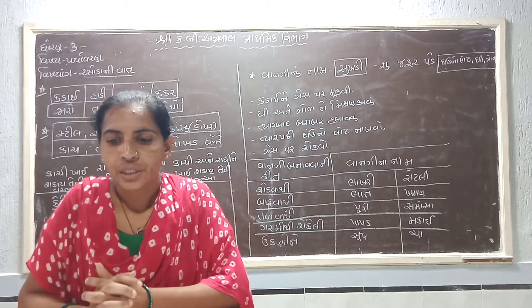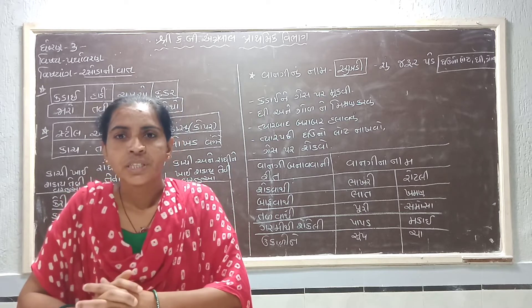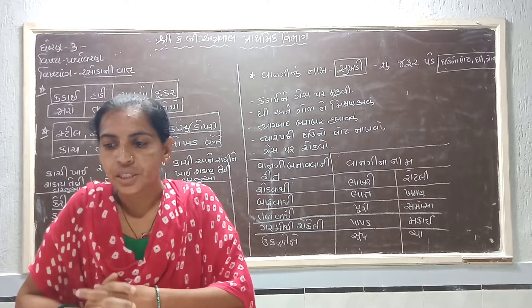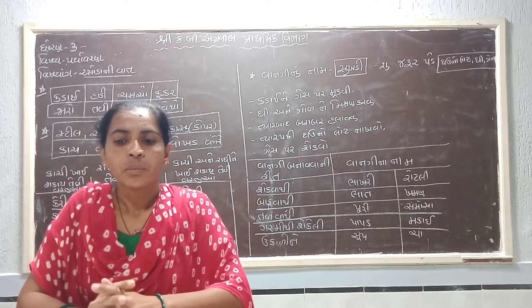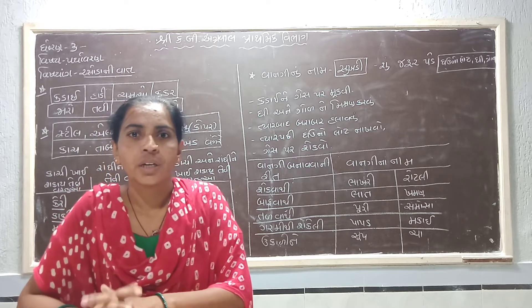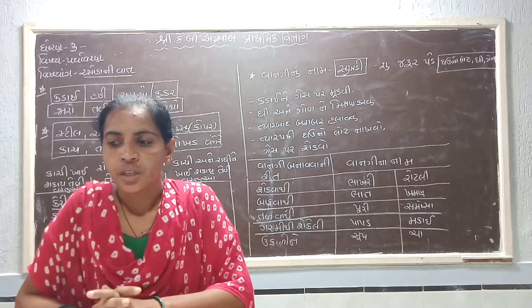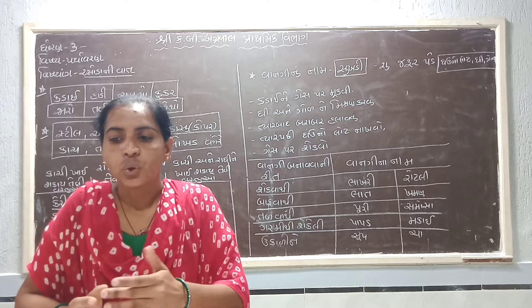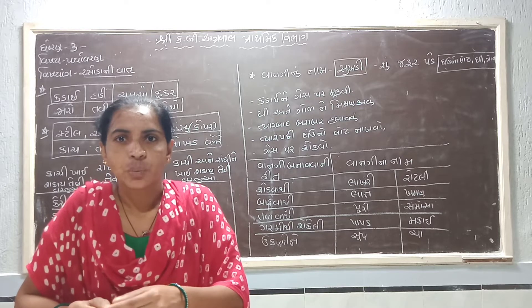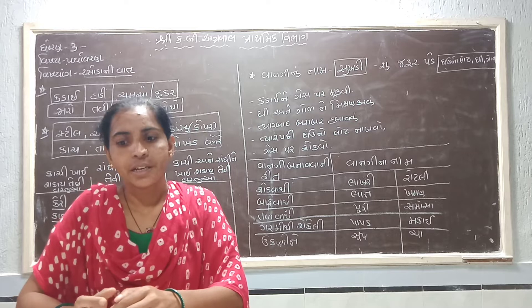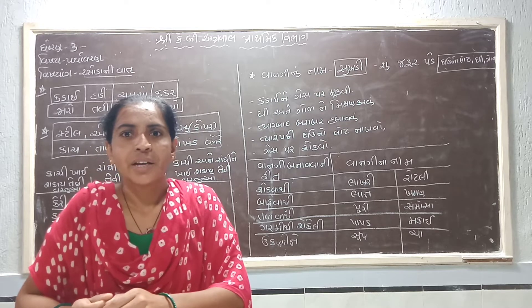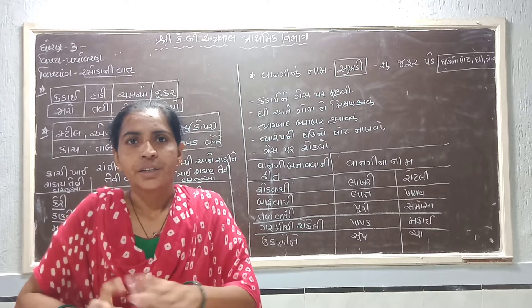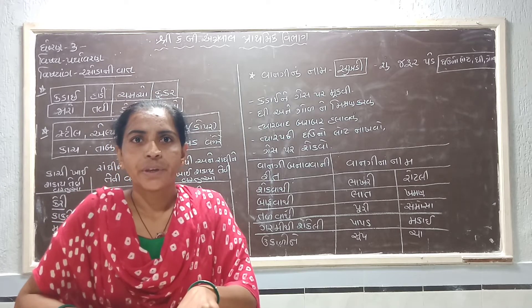તમે મમ્મી ને અથવા તો રસોડામાં રોટલી બનાવતા જોયા હશે. તો રોટલી આપણે કેવી રીતે બનાવીએ છીએ? સૌ પ્રથમ વાસણમાં લોટ લેવાનો, પછી લોટમાં પાણી ઉમેરીને, પછી રોટલી વણી અને નાના ગોળ બનાવી, અને રોટલી આપણે ગ્રિલ/ત-વ્ ા ઉપર સેકીએ.